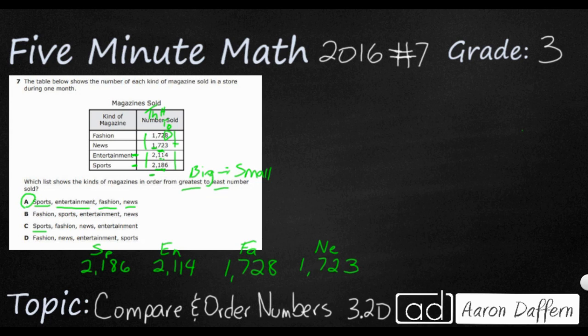Let's look at some incorrect answers and see where they made mistakes. Choice C has fashion at 1,728 and news at 1,723, but then entertainment at 2,000-something. That doesn't make any sense. That's not even close. I don't think many people will choose this one.